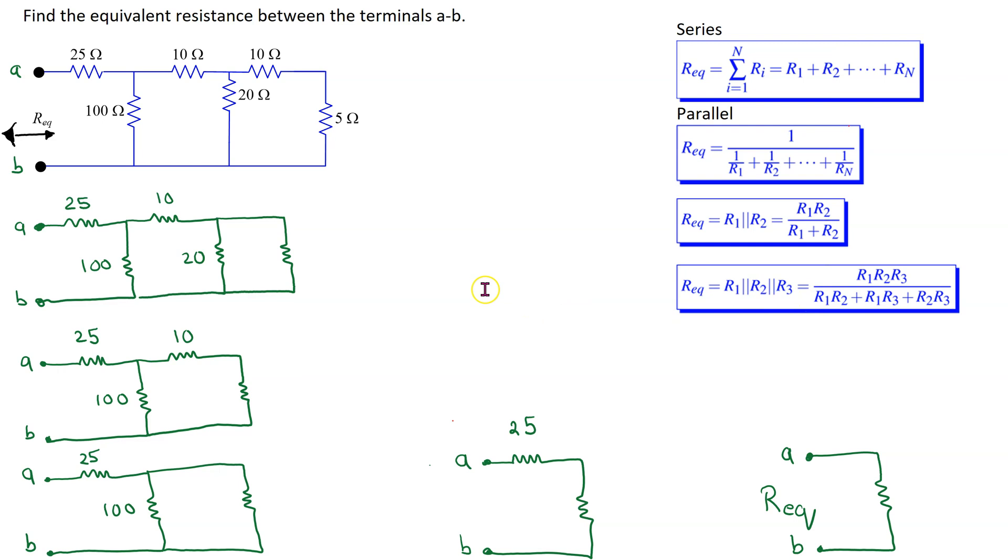So let's get started with this problem. We start at the far end. The 10 ohm resistor and the 5 ohm resistor are clearly in series. This is because the same current would flow through these two resistors. Thus, the equivalent resistance is given by the sum. So 10 plus 5 equals 15, and we can redraw this circuit as shown here.